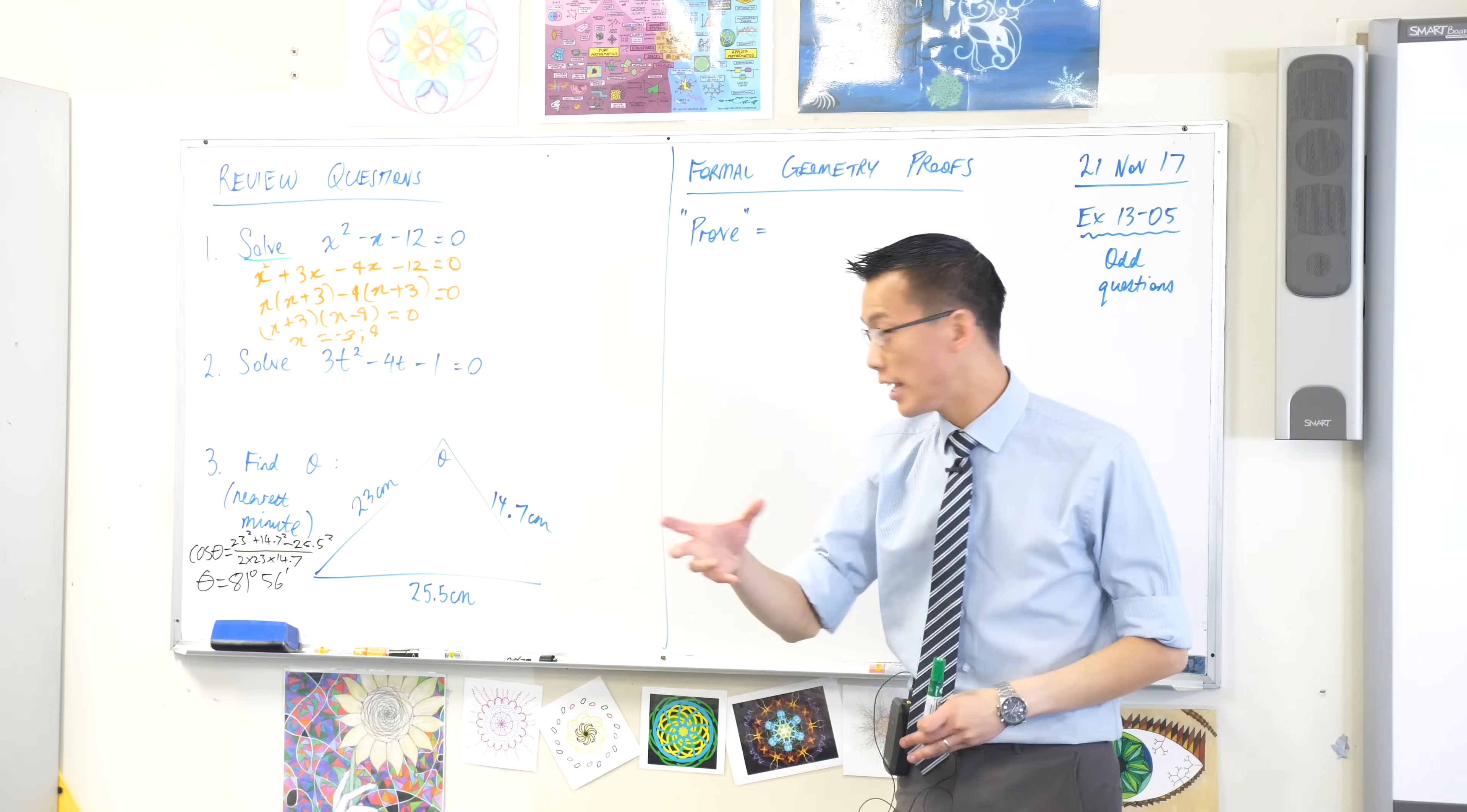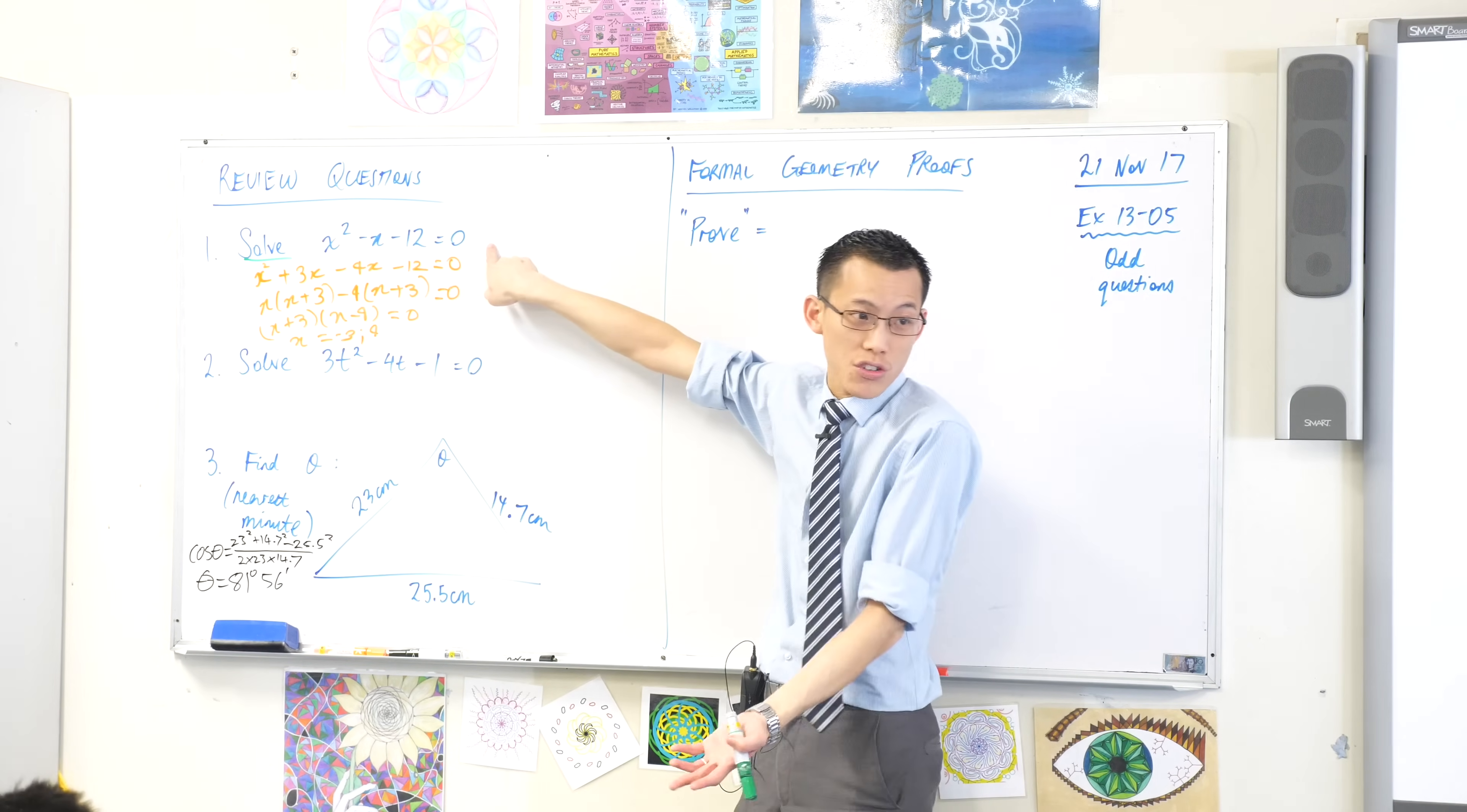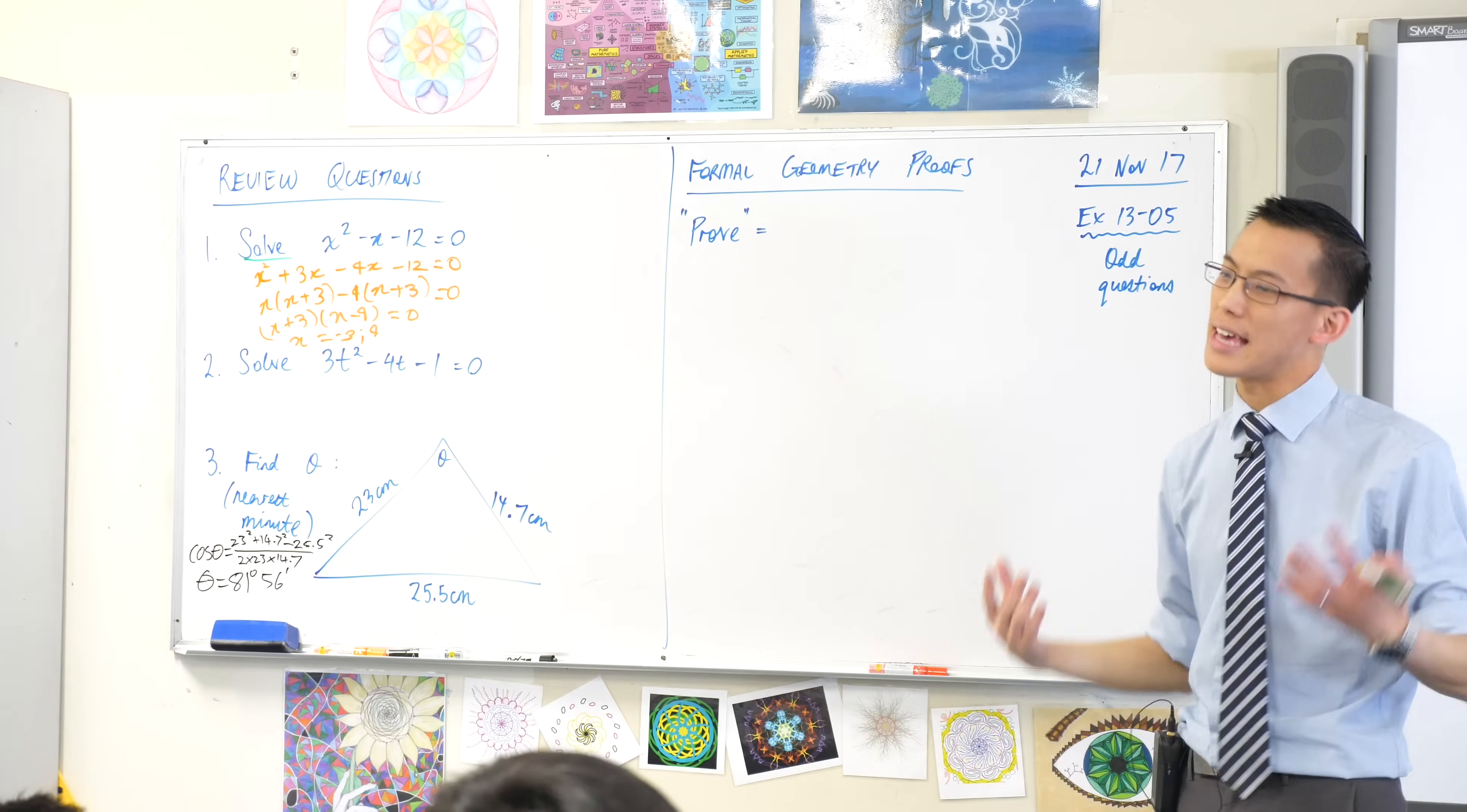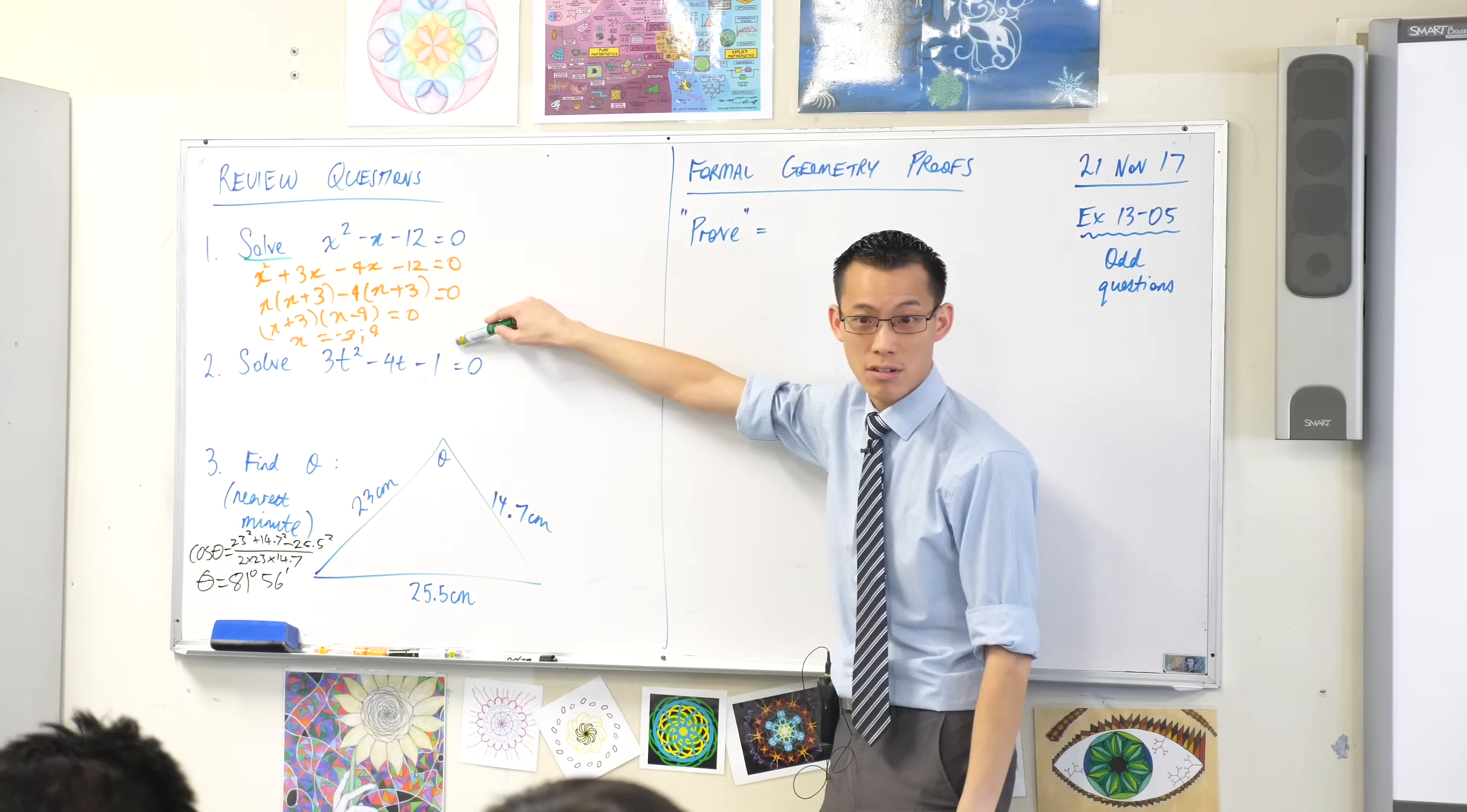Okay, if I substitute in that particular value of x, like say 1 or 2, this is not true. 1 minus 1 minus 12 is not 0, so it doesn't satisfy that original equation. That's what I'm searching for. The best way to be able to find that is to factorize.